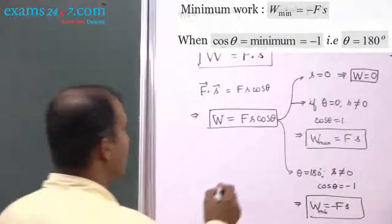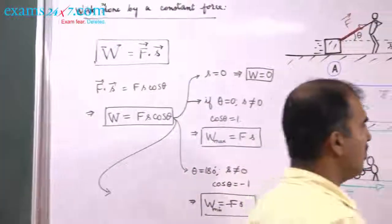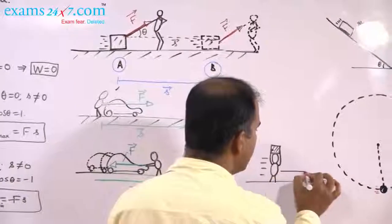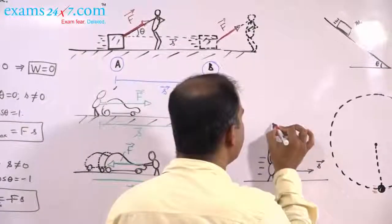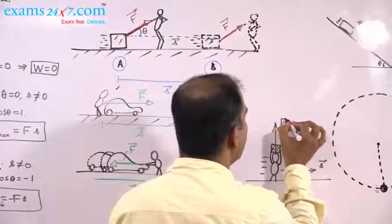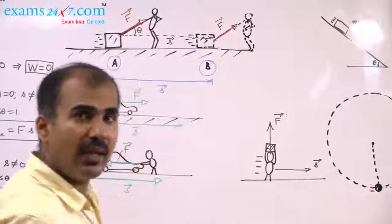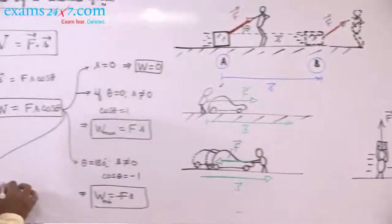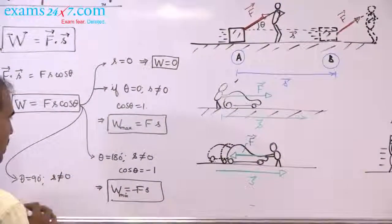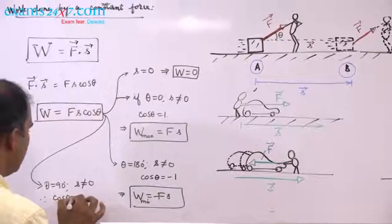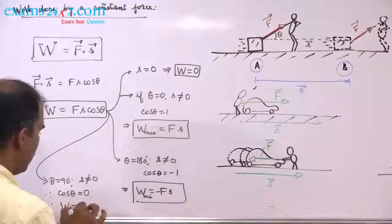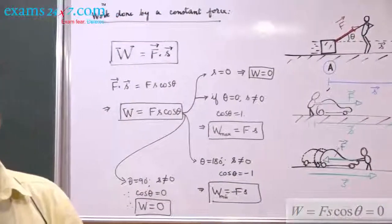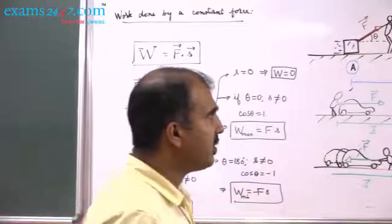Finally, one more case: a man walking with a load on his head. As he walks his displacement is to the right, but the force he applies on the load — the normal reaction force — is perpendicular to his displacement. So θ equals 90°, cosθ equals zero, and therefore work done is zero. When force is perpendicular to displacement, the work done by that force is stated to be zero.